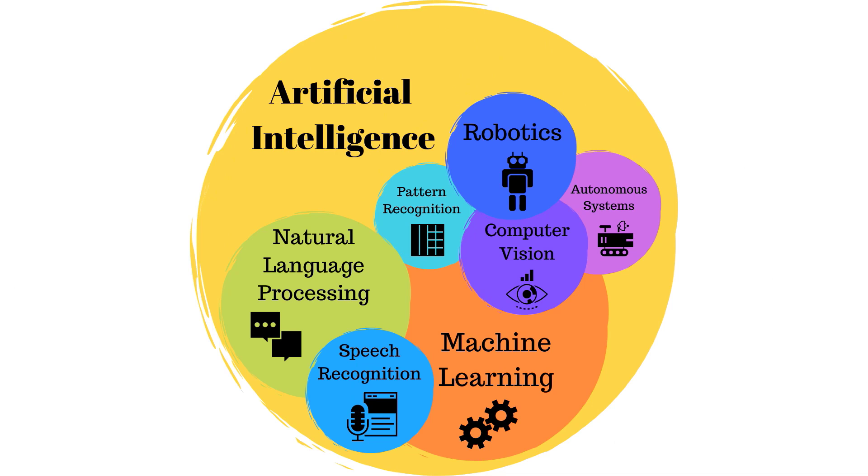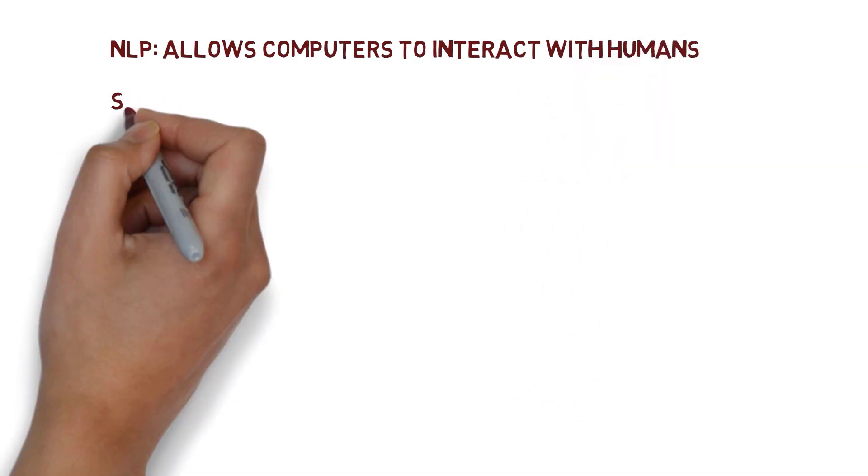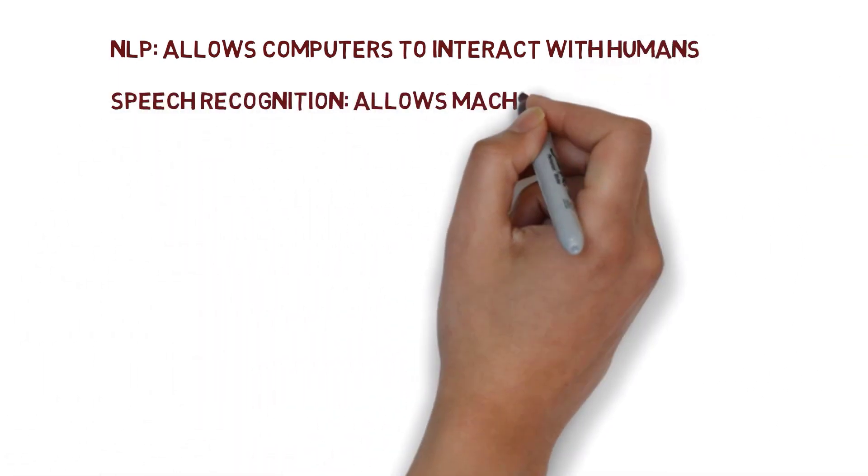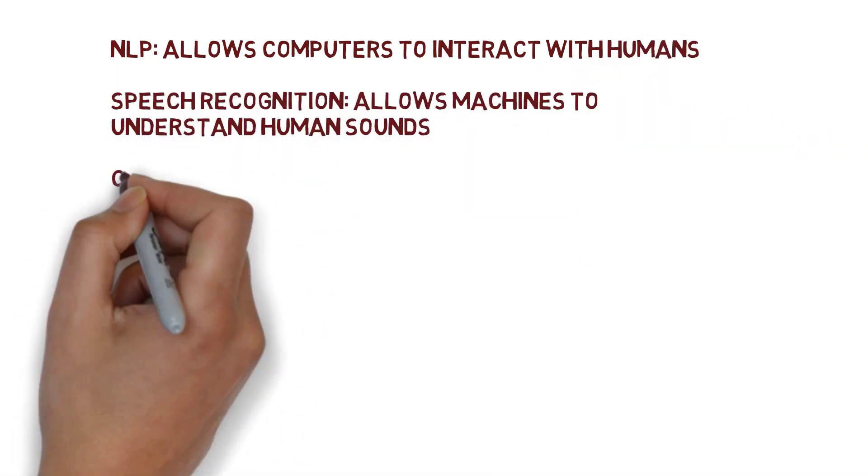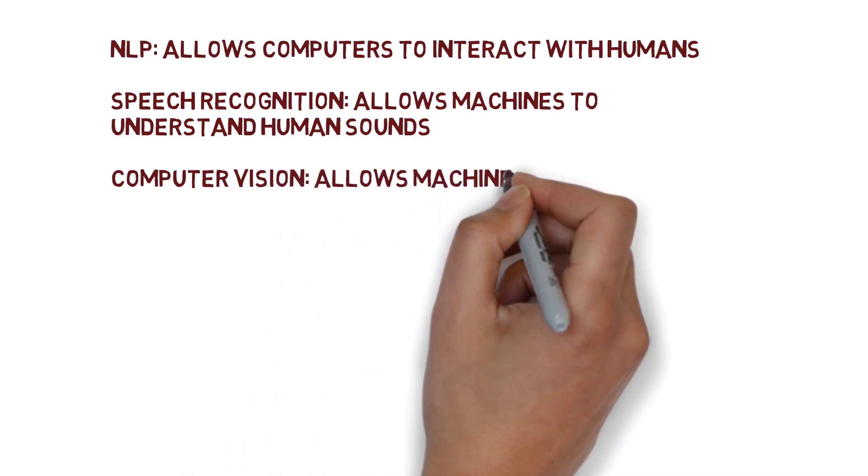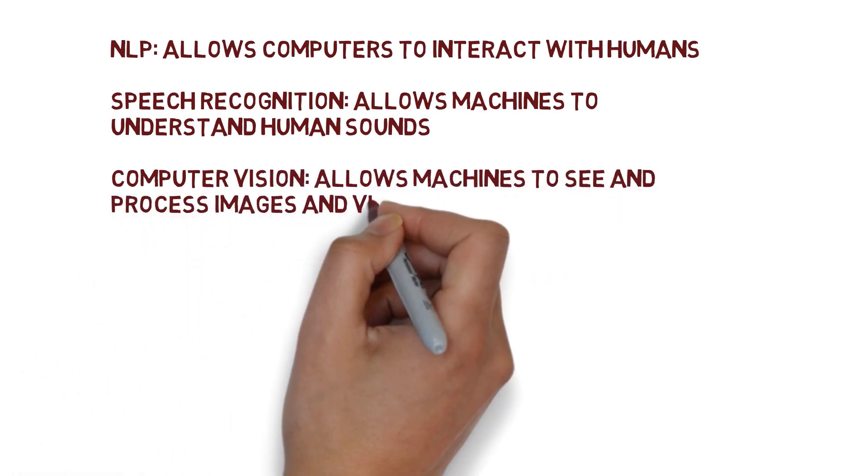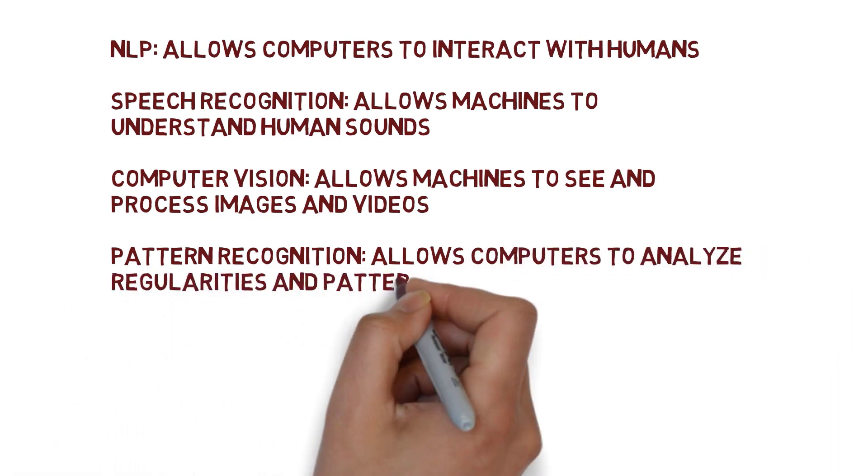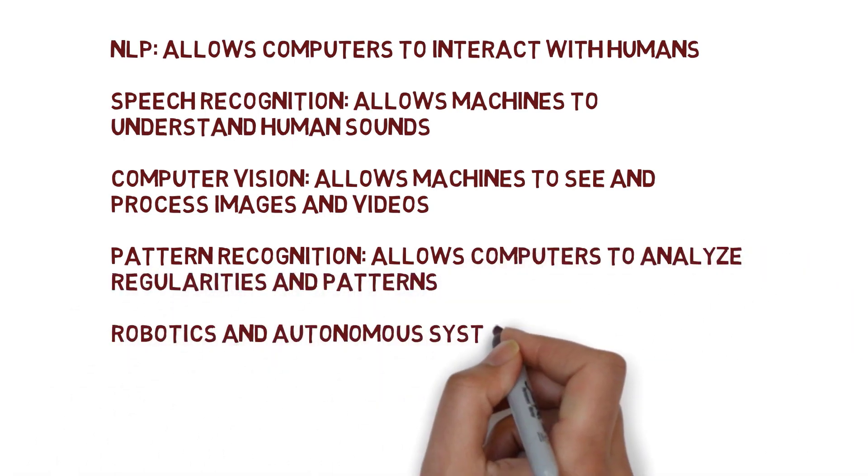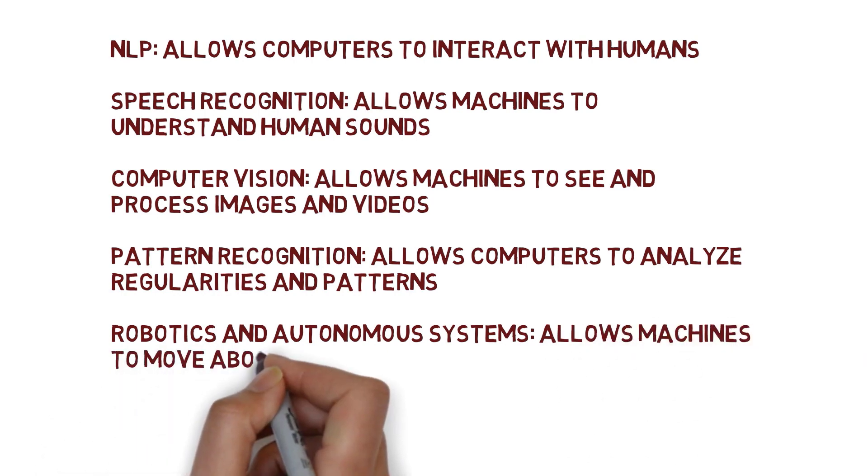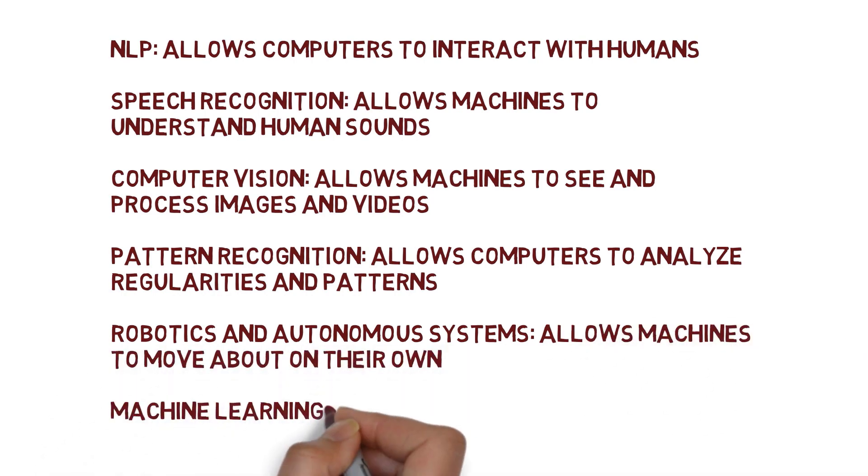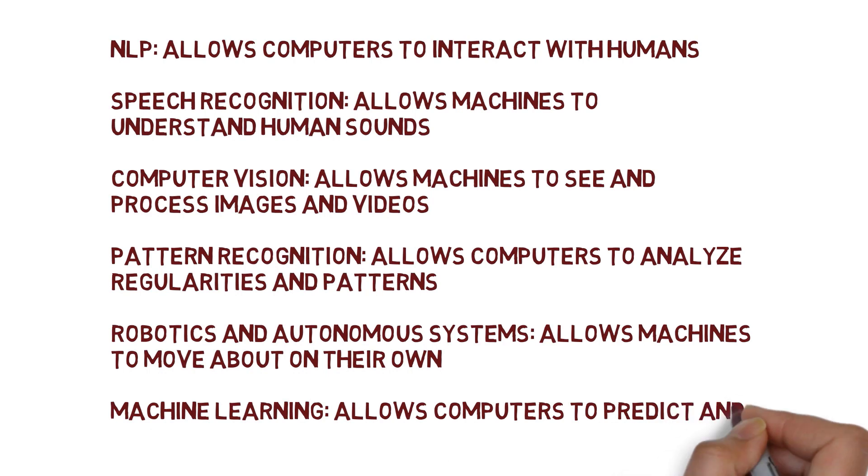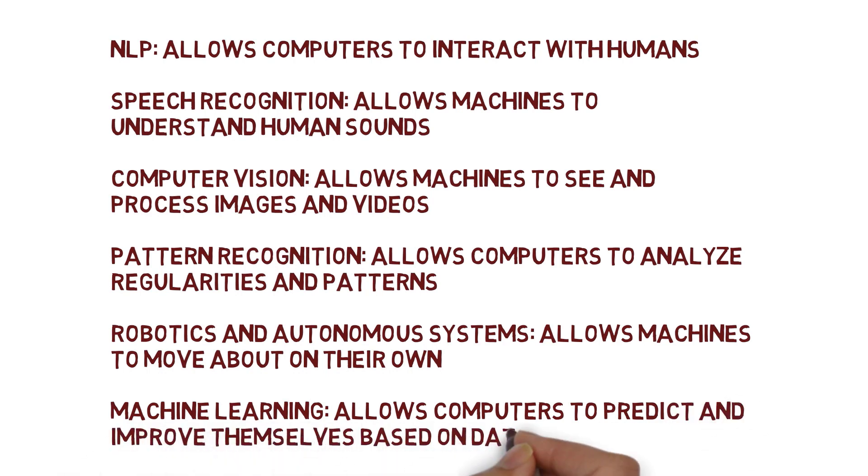So now you've learned about the basics of the primary fields of AI. As a quick summary, we have NLP, which allows computers to interact with humans, speech recognition, which allows machines to understand human sounds, computer vision, which allows machines to see and process images and videos, pattern recognition, which allows computers to analyze regularities and patterns, robotics and autonomous systems, which allow machines to move about on their own, and machine learning, which allows computers to predict and improve themselves based on data and experience.